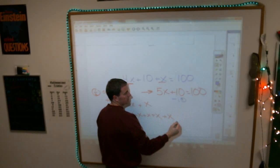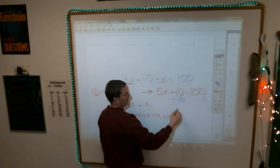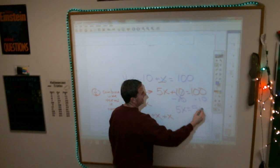Always, always, always get rid of addition, subtraction stuff first. So subtract 10 from both sides. This goes away.